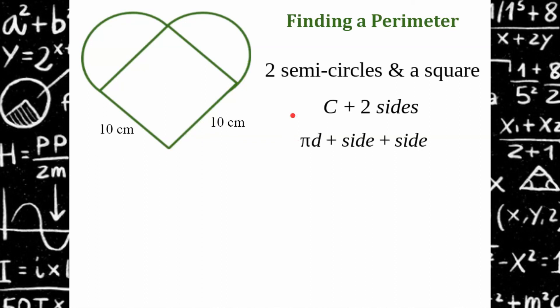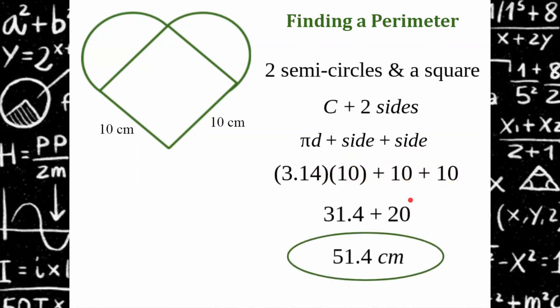Circumference is pi times the diameter. The diameter of these circles are 10 and we have two sides. So the diameter of 10, pi is 3.14 plus each side of 10. Multiply, you get 31.4. Add, and you get 20 for a total circumference of 51.4 centimeters. Thank you for joining me today.